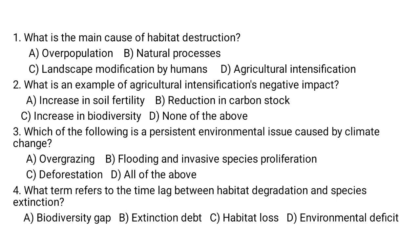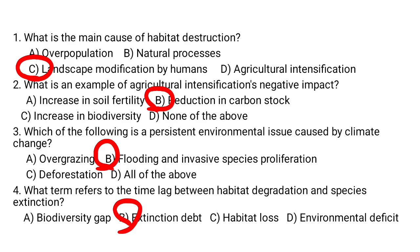The main cause of habitat destruction is landscape modification by humans — c is the correct answer. The example of agricultural intensification negative impact is reduction in carbon stock — b is the correct answer. Flooding and invasive species proliferation is a persistent environmental issue caused by climate change — b is the correct answer. Extinction debt is the time lag between habitat degradation and species extinction — b is the correct answer.